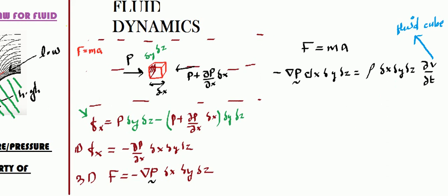So the final expression is: minus gradient of P — where this pressure is the distribution of pressure all throughout the fluid — equals rho times (∂v/∂t). Now I want to express this entire equation in terms of v-tilde, which is the distribution of velocity all throughout the fluid, i.e., in terms of the field variable v.